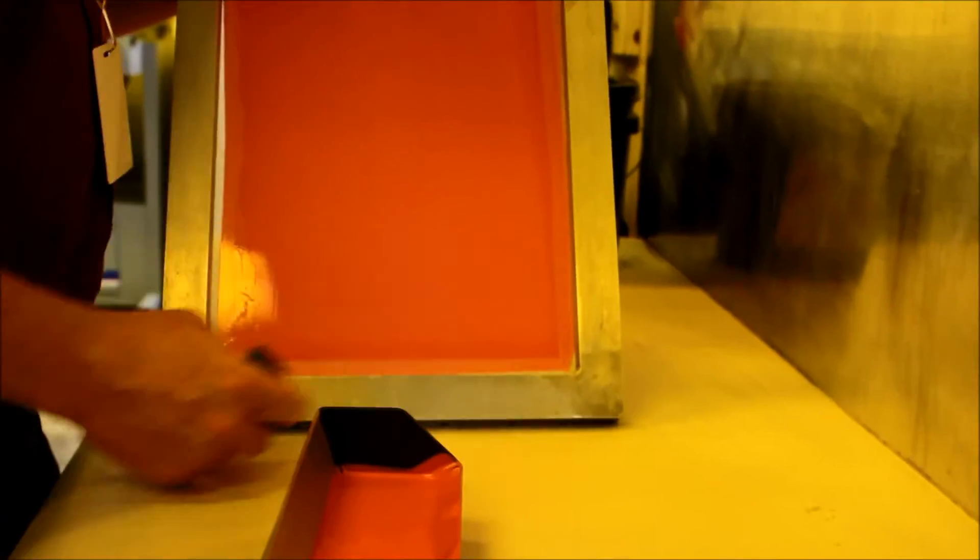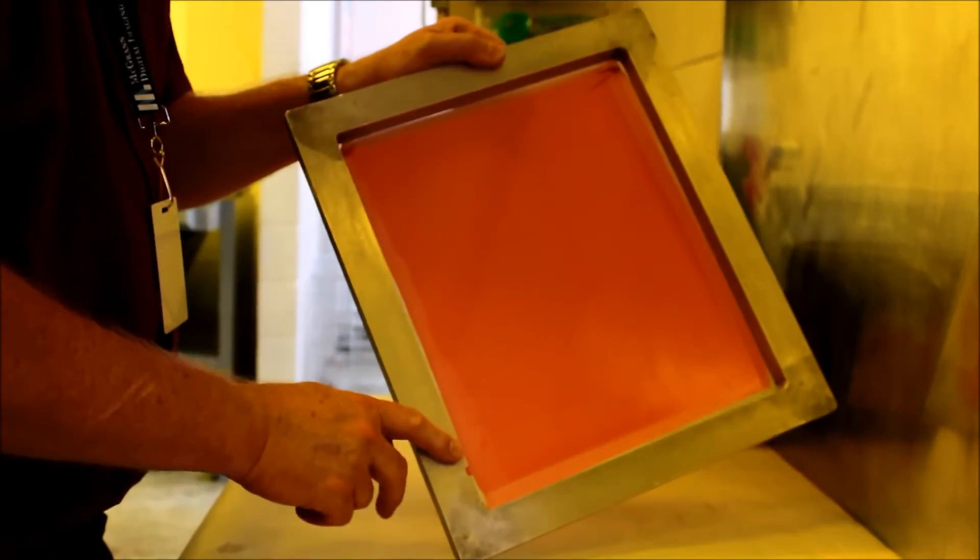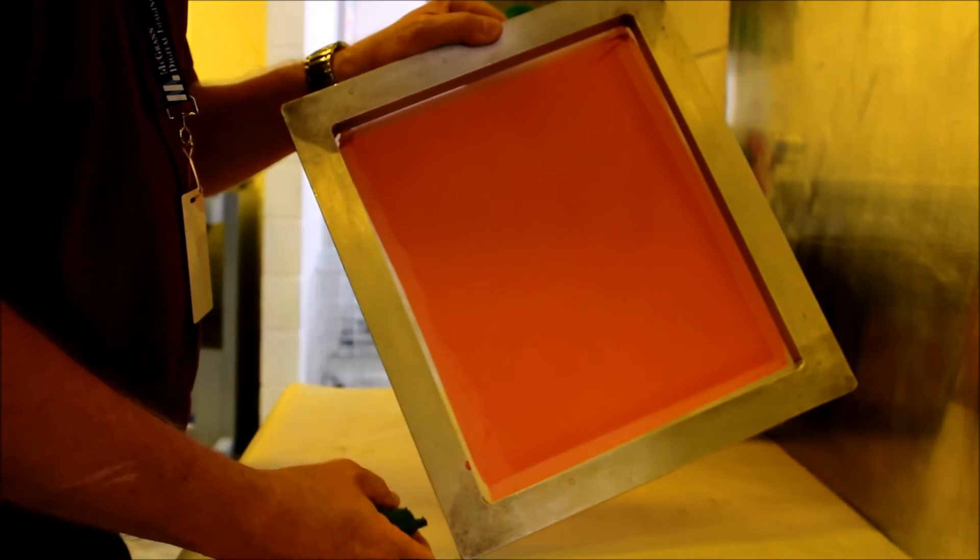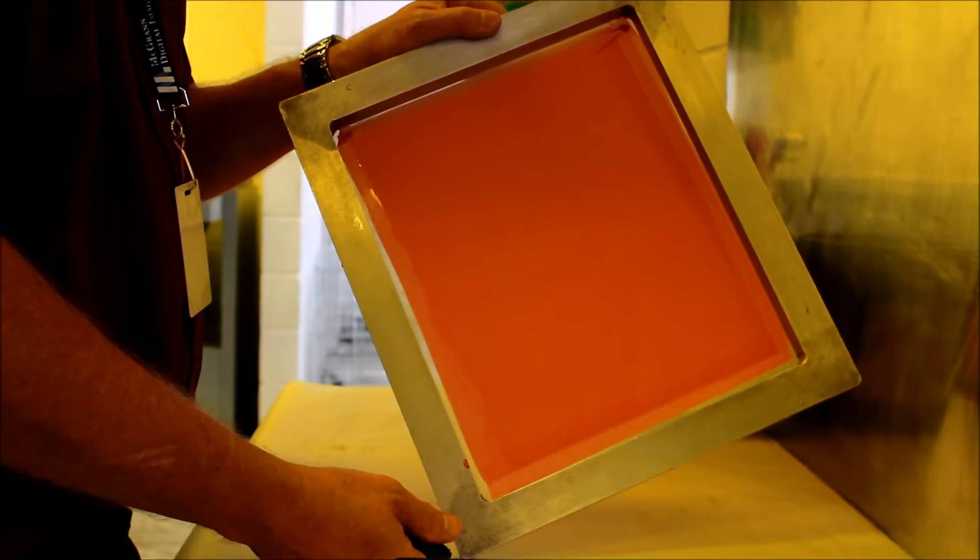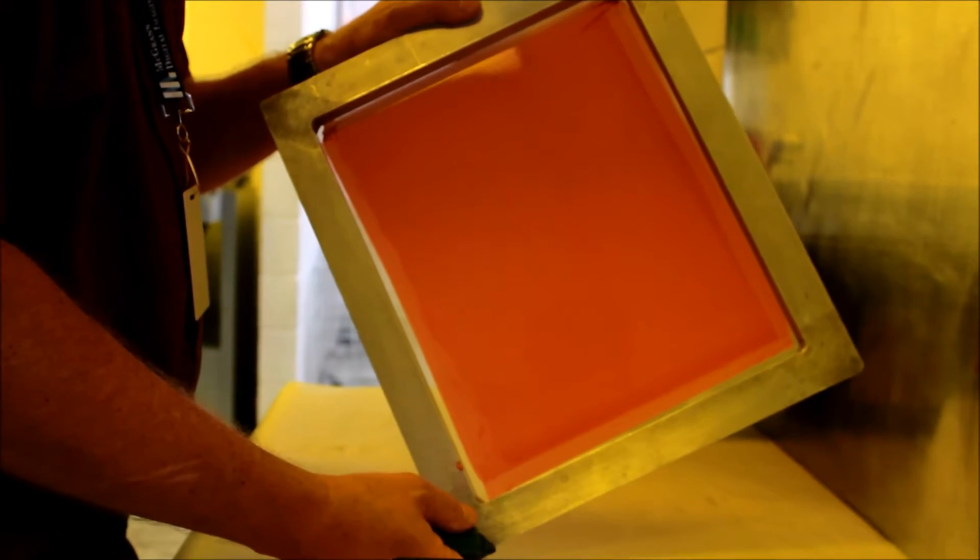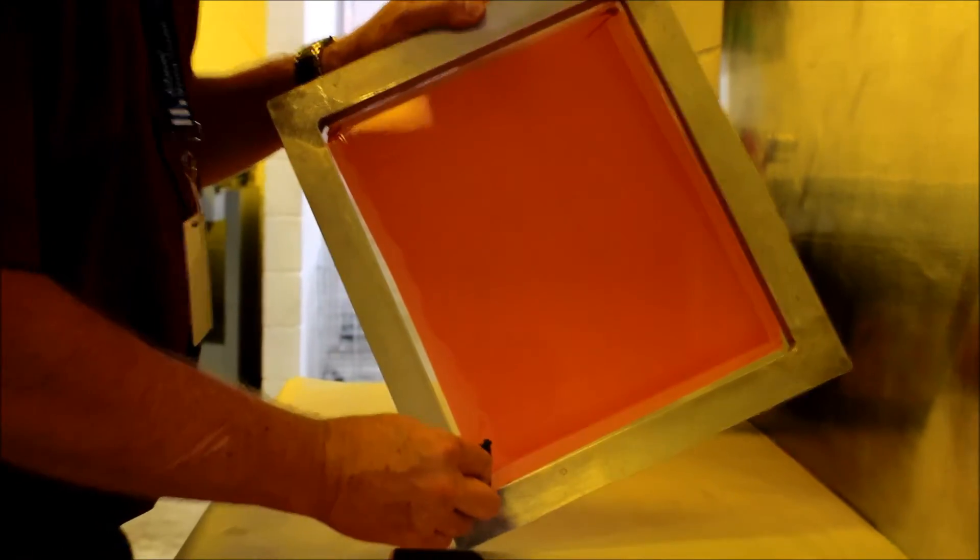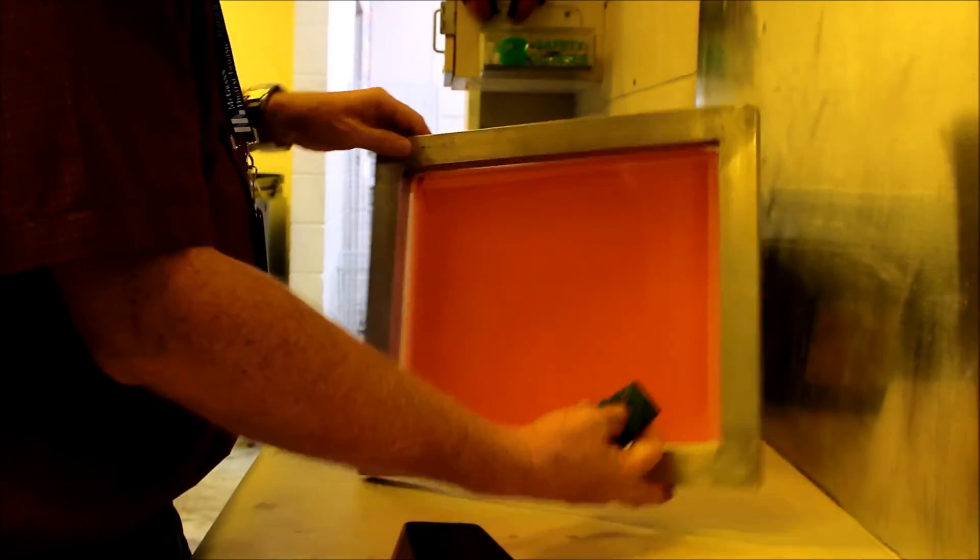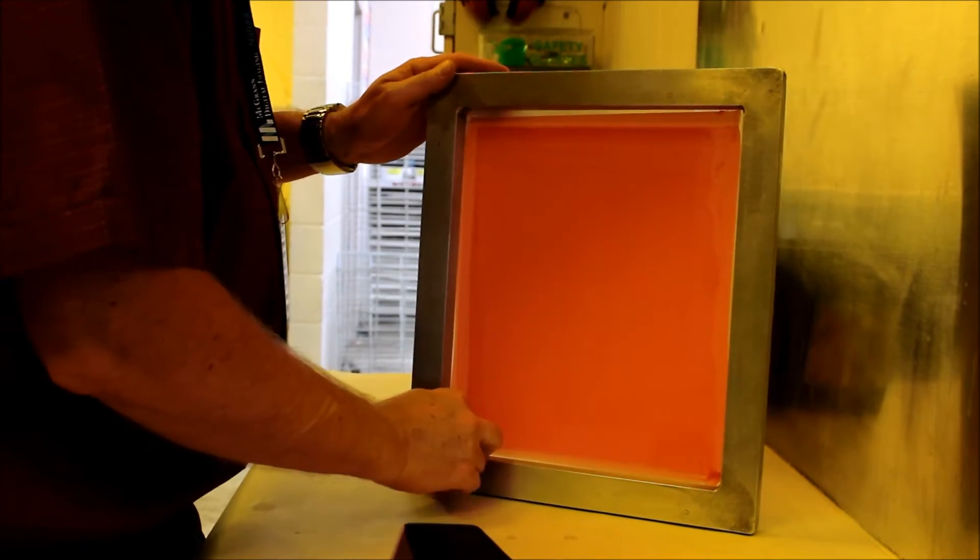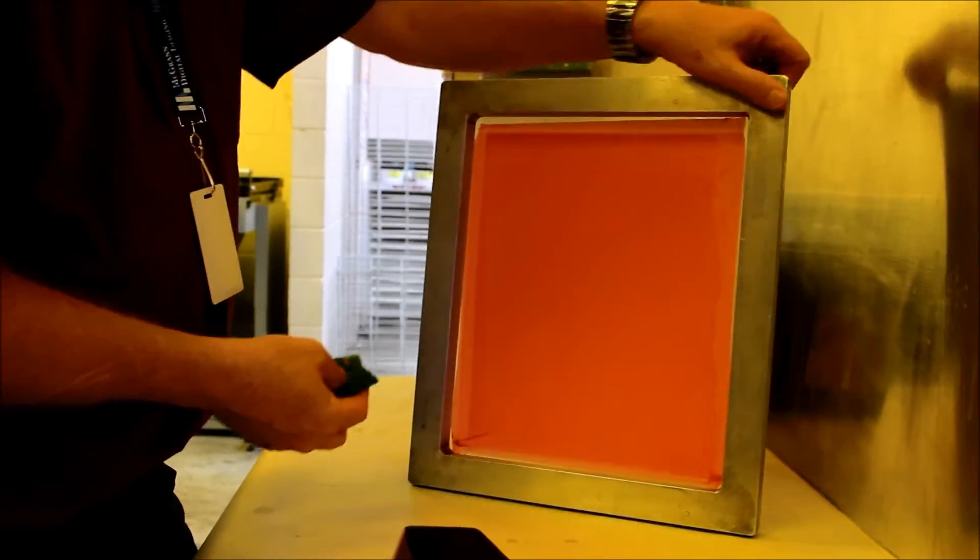Before we put it away, we want to make sure that any emulsion that's on your frame is cleaned off. It's easy to get off when it's wet. After it's dried, you must use chemicals and hard scrub pads in order to remove it. So now's the time to take a scrub pad that has a little water in it, go around, check all four corners, wipe out any emulsion there may be.